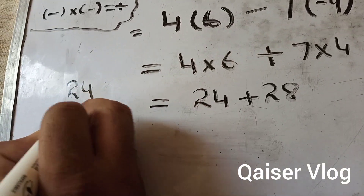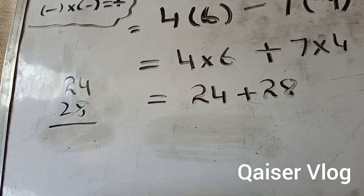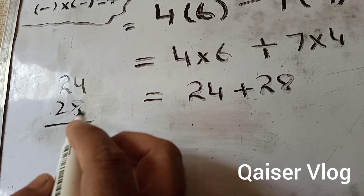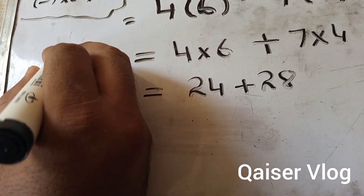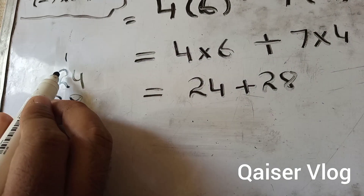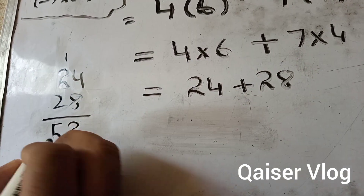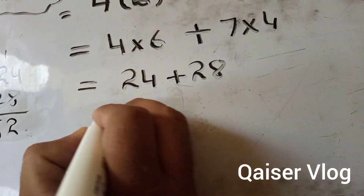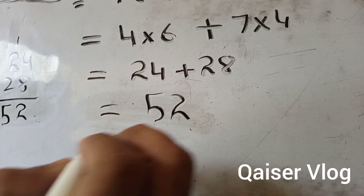In the next step we write the answer: 4×6 is 24 and 7×4 is 28. Now we add them: 24 plus 28 — 8 and 4 is 12, carry 1, 2 plus 2 is 4, plus 1 is 5, giving 52. So the answer is 52.